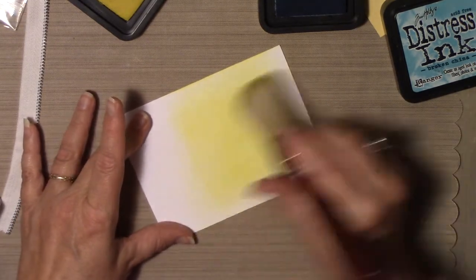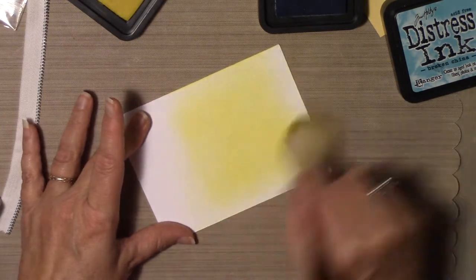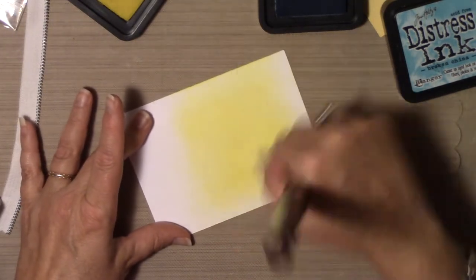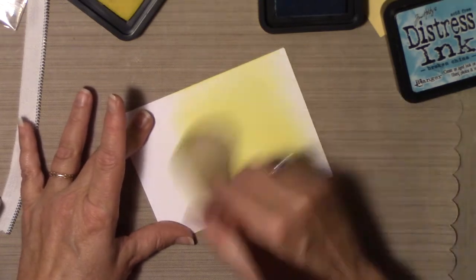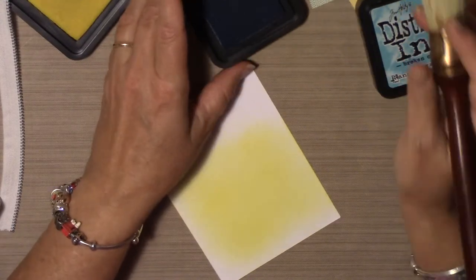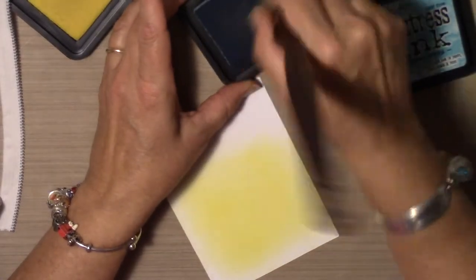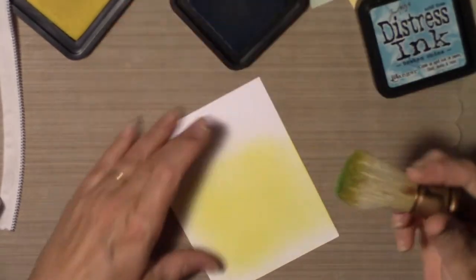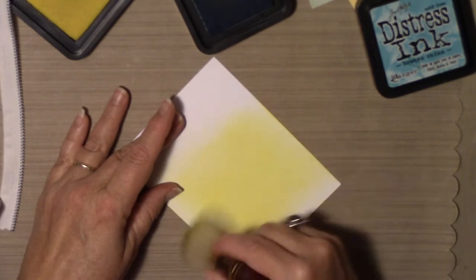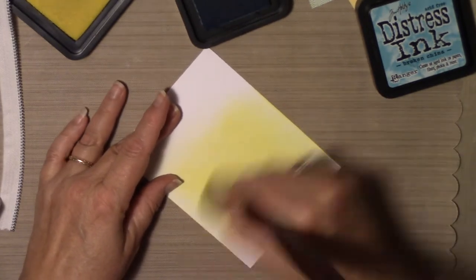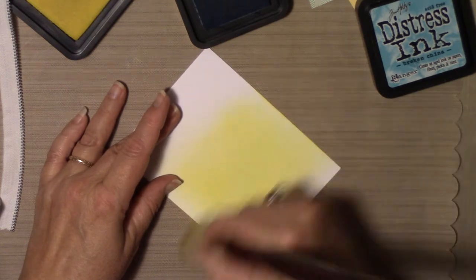Now the other two I'm not going to do this with, it's just I wanted this first layer to be even. So now my middle color is tumbled glass and then broken china is next. So I'm just brushing this on. This is my middle color and I'm just going to kind of start again right in the middle.